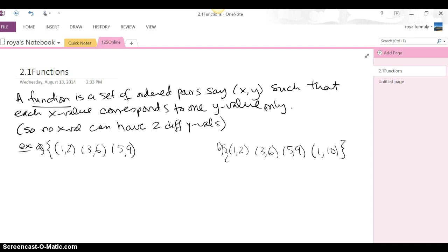So let's take a look at the first example, A. We have a set of ordered pairs, and each x is associated with a y, or each first item is associated with a second item. 1 is with 2, 3 is with 6, 5 is with 9, is this a function?